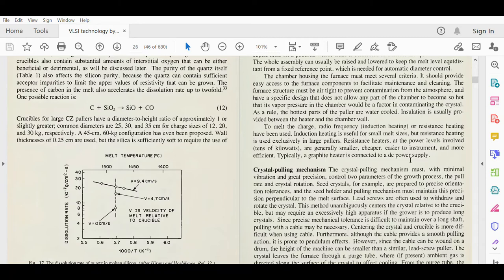The crystal pulling mechanism must, with minimal vibration and great precision, control two parameters of the growth process: the pull rate and the crystal rotation. Seed crystals are prepared to precise orientation tolerances, and the seed holder and pulling mechanism must maintain precision perpendicular to the melt surface. Lead screws are often used to withdraw and rotate the crystal. This method unambiguously creates the crystal relative to the crucible.